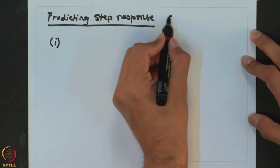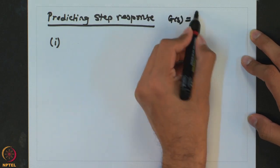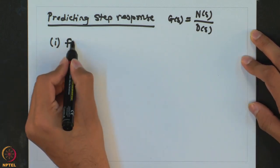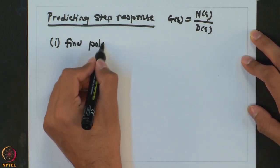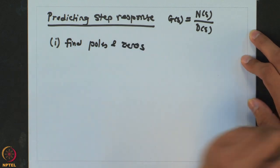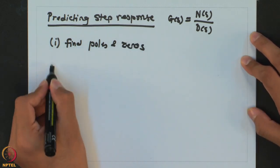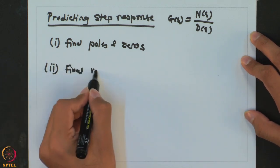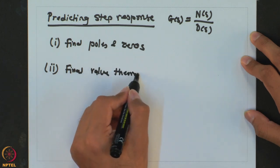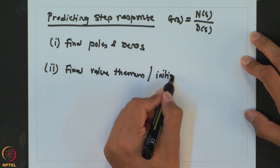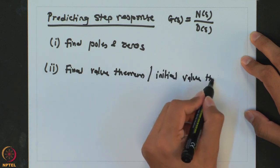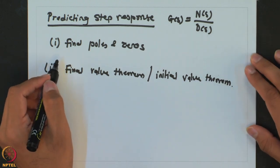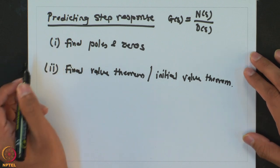The first step, for a transfer function of the form N(s) over D(s), is to find all the poles and zeros. The next step is to use the final value theorem, and in certain cases the initial value theorem as well. With the help of these two, we would be able to predict the step response of any transfer function.